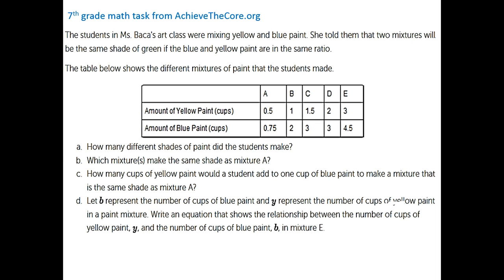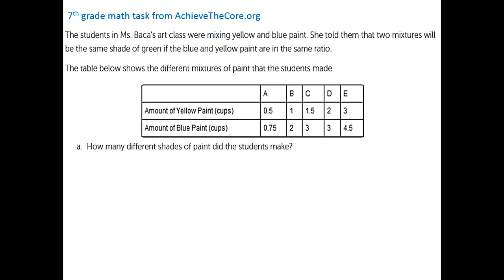Let's look at a 7th grade math task from AchieveTheCore.org. The students in Ms. Baca's art class were mixing yellow and blue paint. She told them that two mixtures will be the same shade of green if the blue and yellow paint are in the same ratio. There's a table showing different mixtures of paint that five students — A, B, C, D, and E — made. We're going to go through these questions one at a time using ratios and proportions. The first question is: how many different shades of paint did the students make?